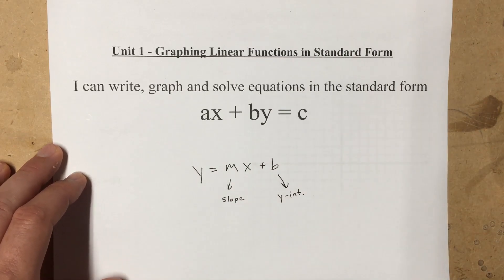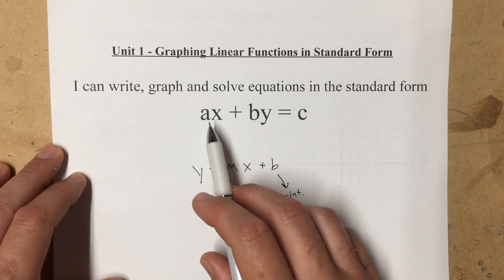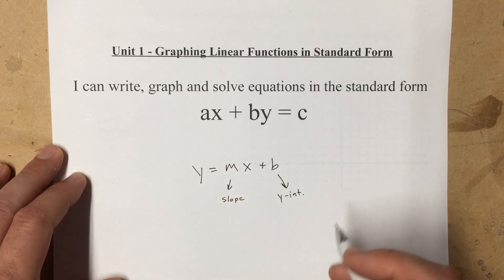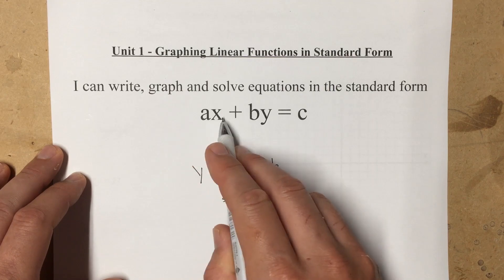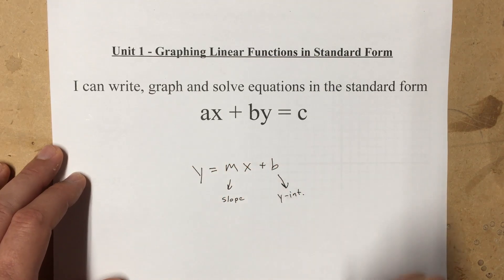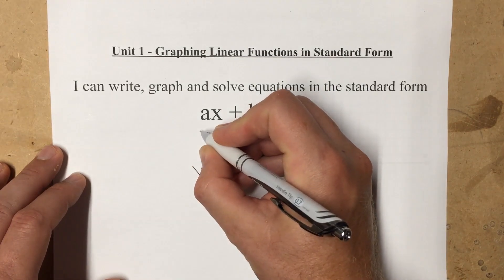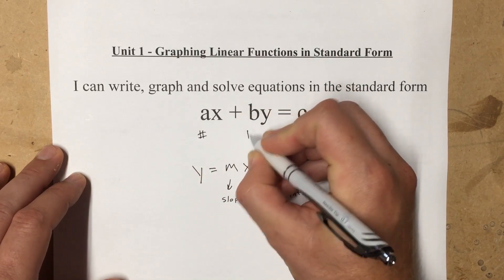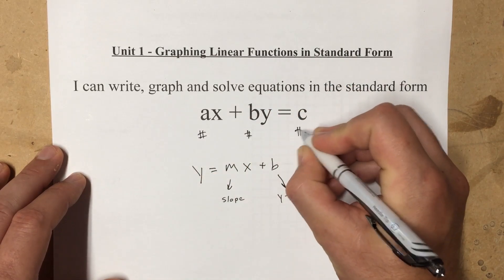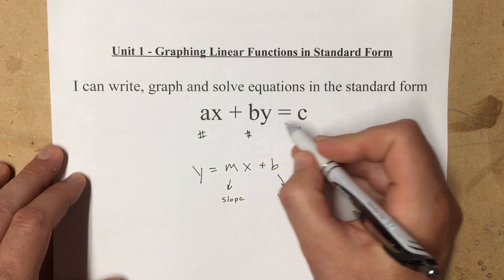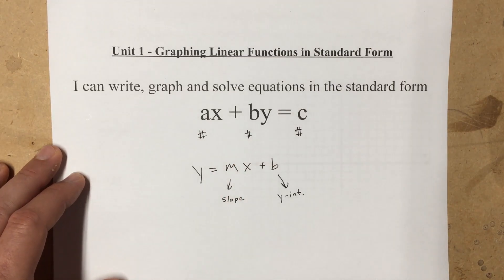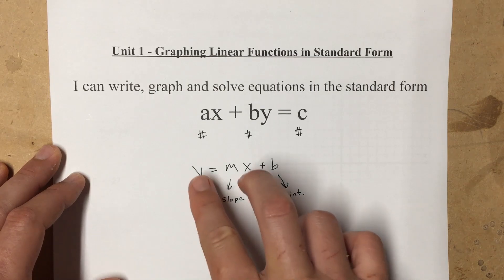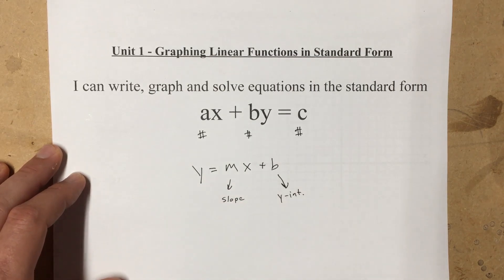Today we're going to be taking a look at how to graph in a slightly different form. This is called standard form. Basically you have Ax plus By equals C, where your A, B, and C are just numbers, and your two variables x and y are on the same side of the equal sign, as opposed to on opposite sides.